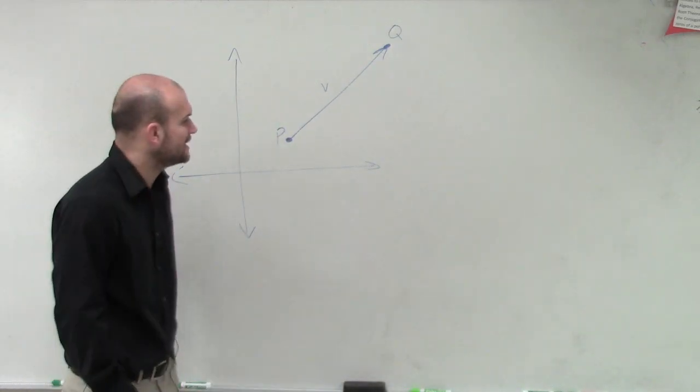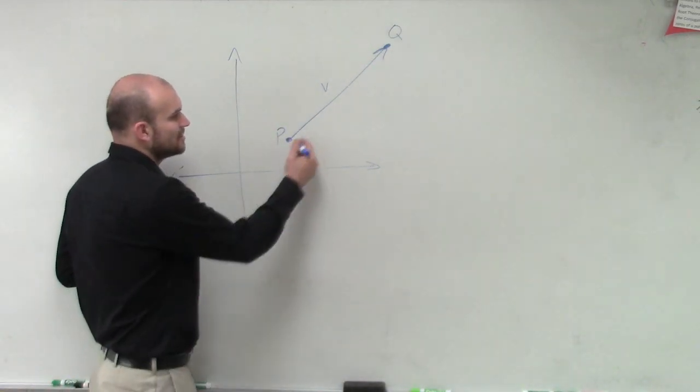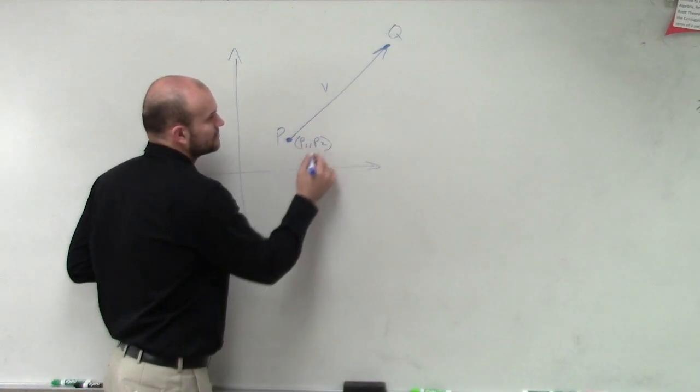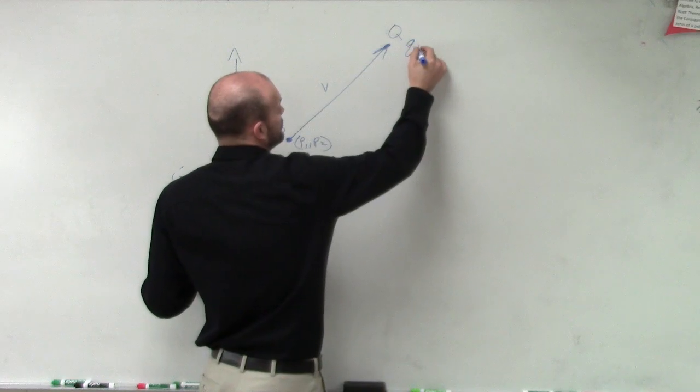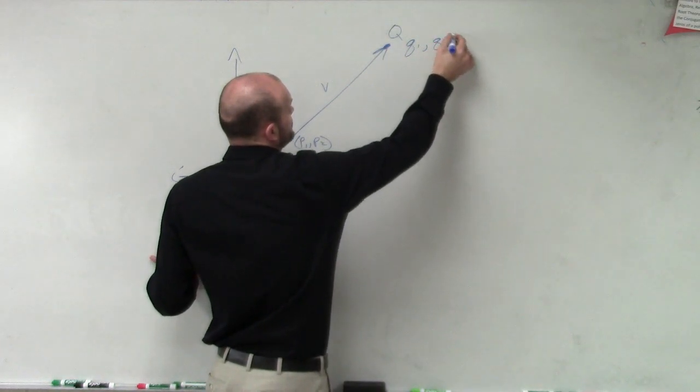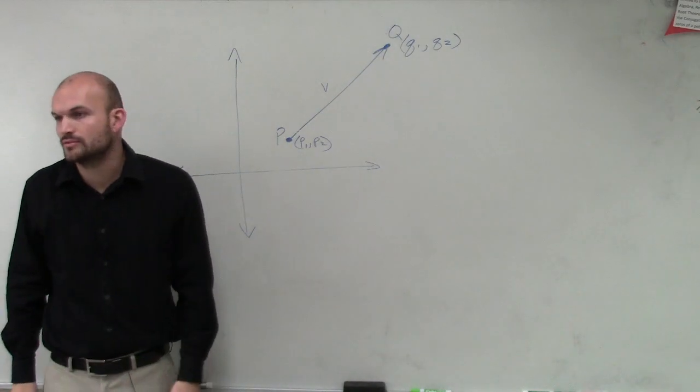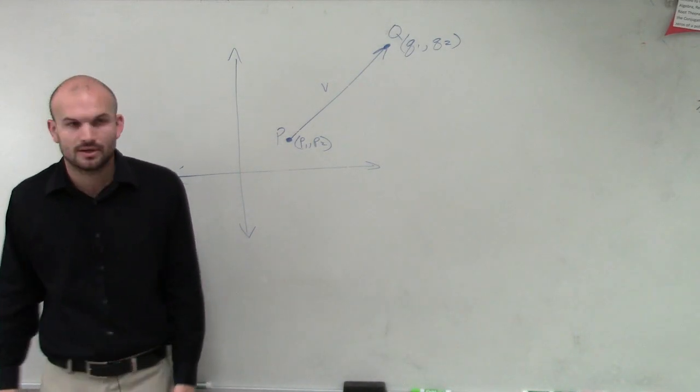So what we're going to be looking at now is let's go and call these points, let's call this point p1 comma p2, and let's call these points q1 comma q2. So the coordinates are going to be p1 and p2.